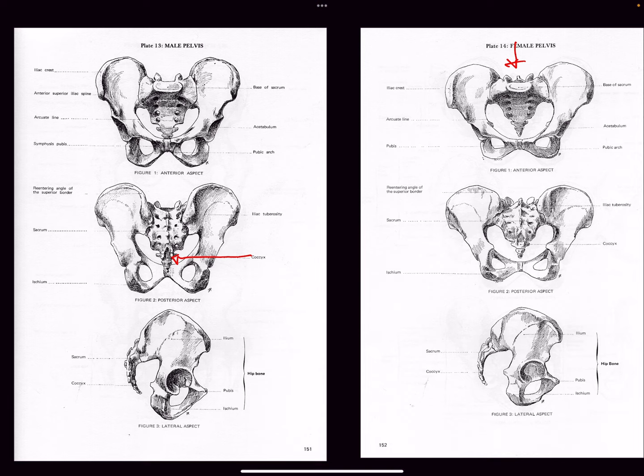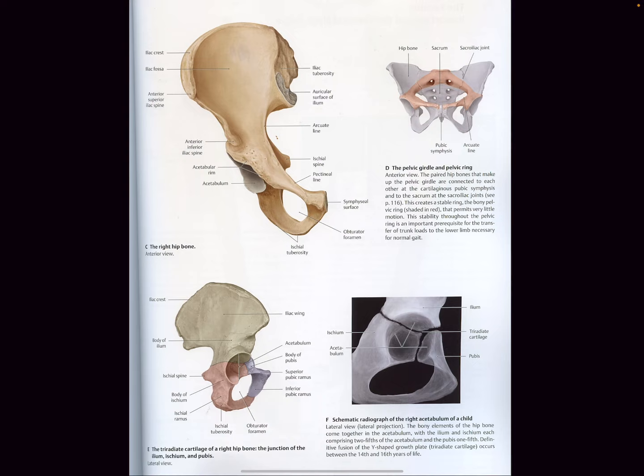The male pelvis tends to have a more dense bony tissue — male bones are heavier than female bones, majority of the time. It's also because the mass of the muscles tends to be a little bit heavier on the male form, so we need a little bit more stability.